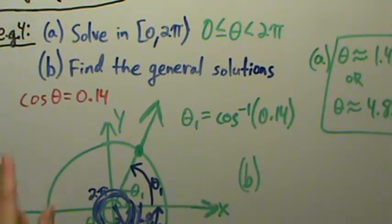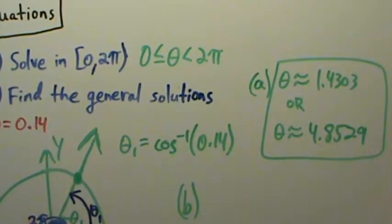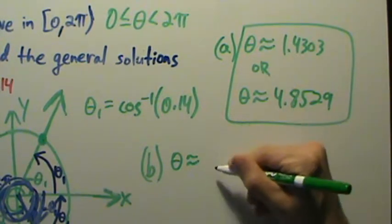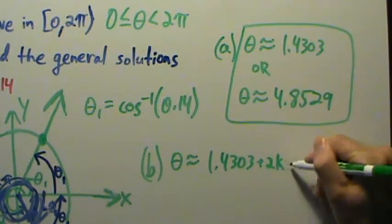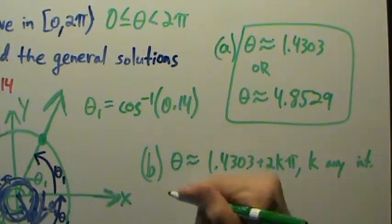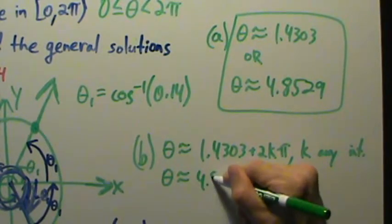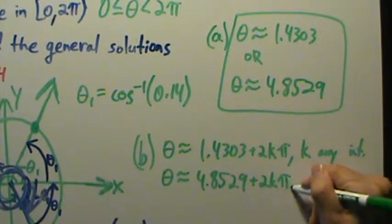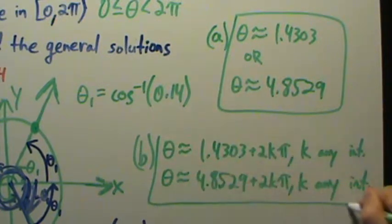So we're just going to do exactly the same thing for part B. Take our specific solutions from this interval and then add 2k pi, where k represents any integer. So theta is approximately 1.4303 plus 2k pi, where k is any integer, or theta is approximately equal to 4.8529 plus 2k pi, where k is any integer. And that's it for part B.